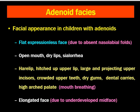The facial appearance in children with adenoids includes a flat, expressionless face due to absent nasolabial folds and hypodevelopment of the malar bones. The child will have an open mouth, dry lips, and drooling of saliva due to mouth breathing. The child may also have a raised upper lip resembling a hare lip, large and projecting upper incisors, crowded upper teeth, dry gums, dental caries, and a high arched palate. The face will be elongated due to underdevelopment of the mid-face, as the mid-face structures cannot get enough oxygen for normal development.